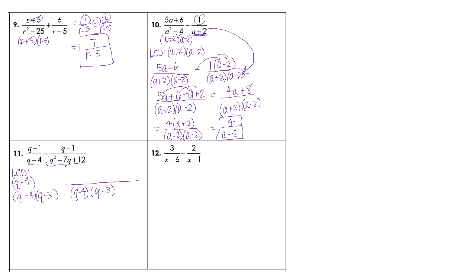This denominator: what did I multiply to q minus 4 to get q minus 4 times q minus 3? Well, q minus 3. So I take my numerator — q plus 1 — and multiply by q minus 3, because that was the new part I didn't have. Then minus, and this denominator already matches my new common denominator, so I just bring over the numerator: q minus 1. The fun part begins — we're going to foil out the top, then combine like terms.